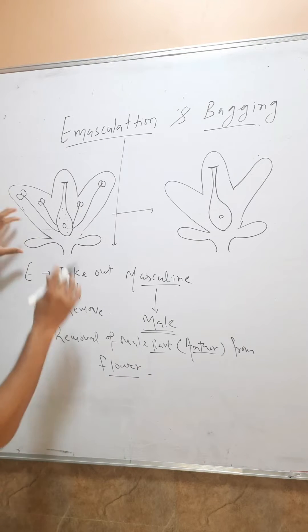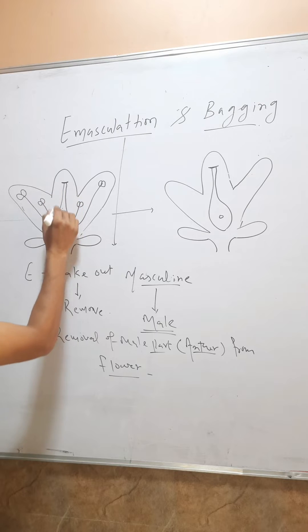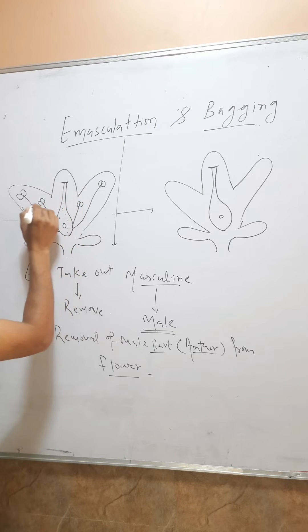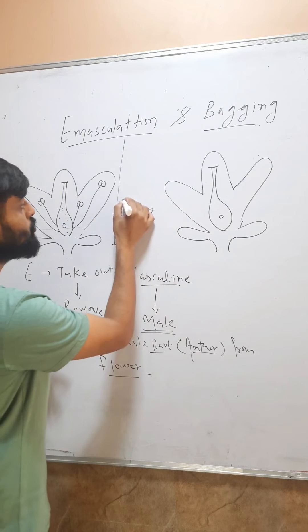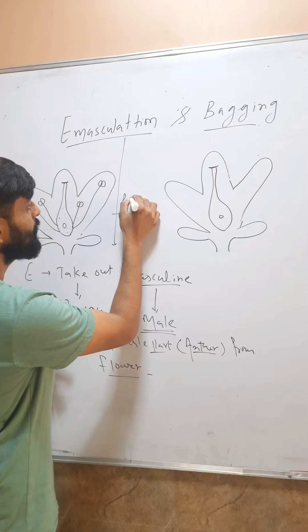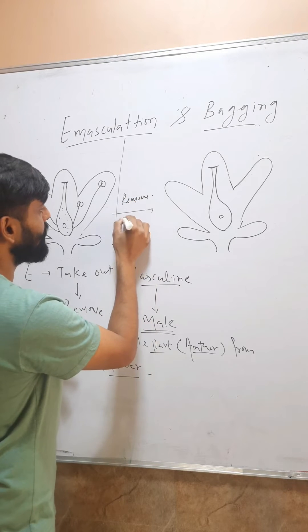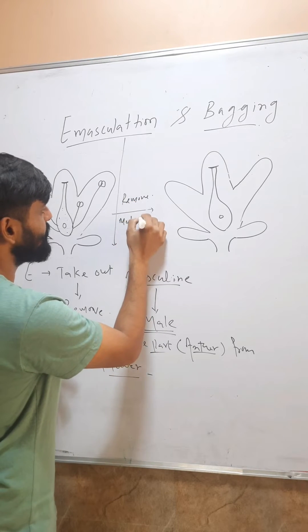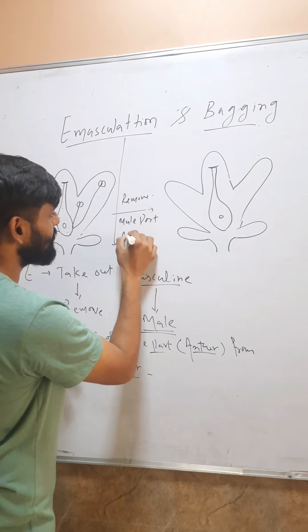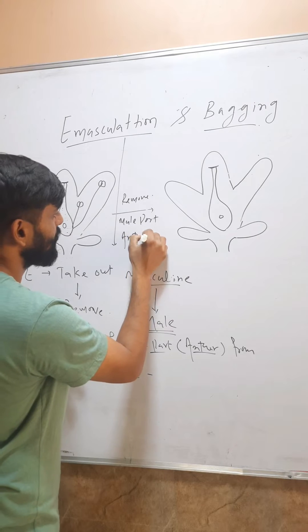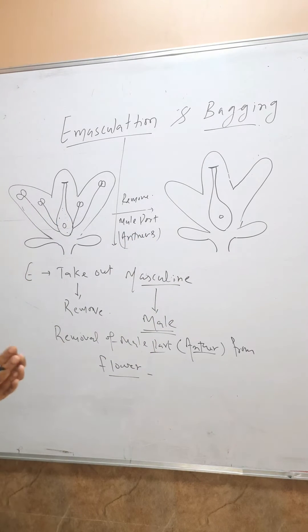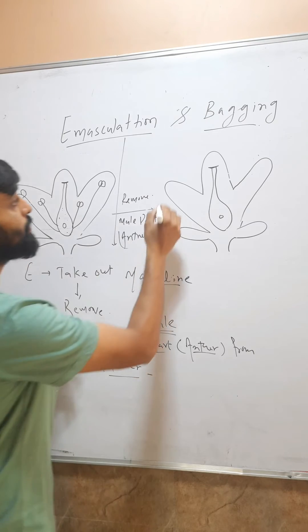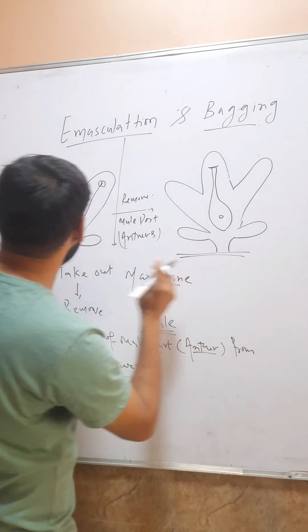So this is a flower — a bisexual flower. This one is the female part and these are the male parts. So when I remove those male parts — the anthers — then this process of removal of the male part is called emasculation.